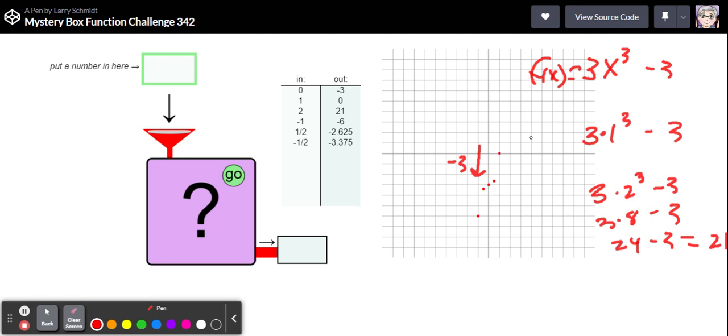Let's go ahead and put in that negative one. So three times negative one cubed minus three. Well negative one cubed is still going to be a negative one. When you square it it becomes positive, when you cube it it stays negative. So that three times negative one is negative three and then minus three would be negative six and that's what we're getting.